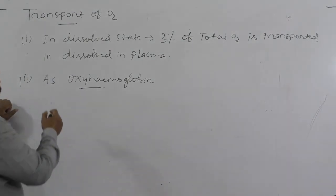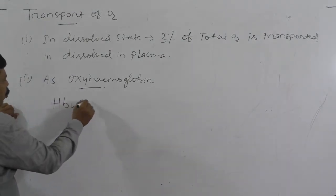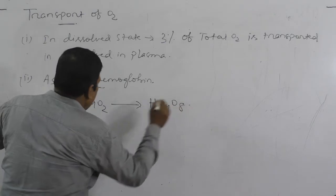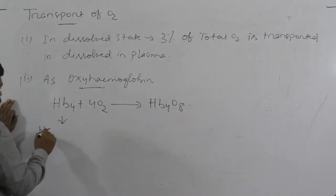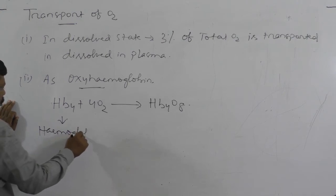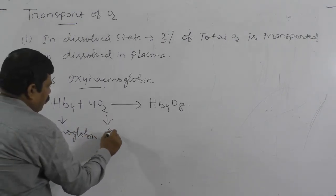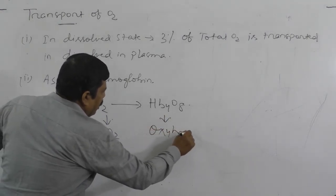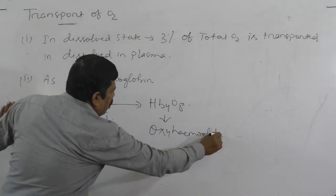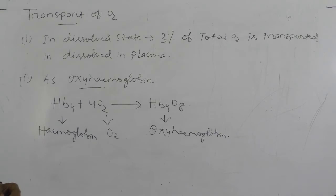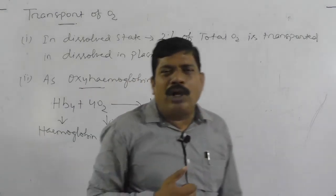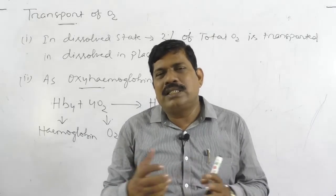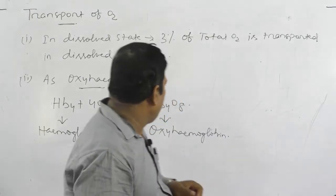The reaction for oxyhemoglobin formation is: Hb4 + 4O2 → Hb4O8. Hemoglobin is a purple-red color, while oxygenated blood — carrying oxyhemoglobin — is a bright red color.